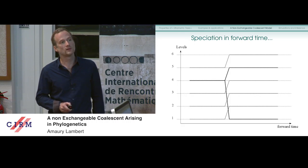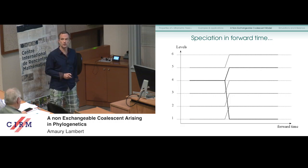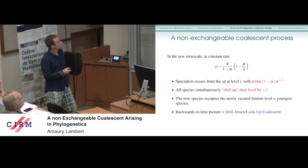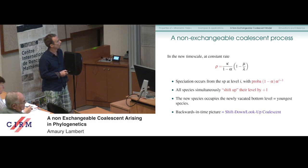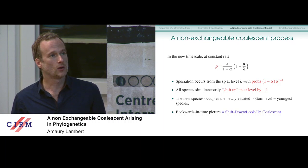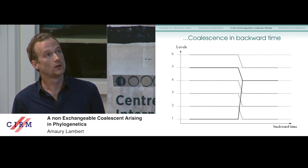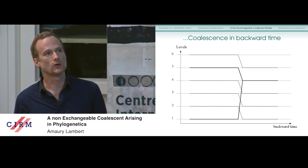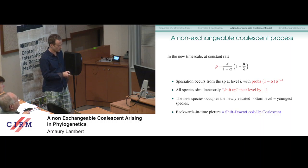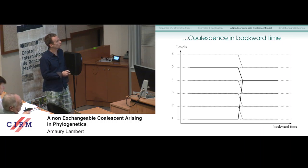At constant rate rho, speciation occurs from the species at level i with geometrically distributed probability. All species simultaneously shift their level up by plus one, and the new species occupies the newly vacated bottom level. In the backward-in-time picture, all levels shift by minus one, and the species at level one coalesces with a geometrically distributed level. We call this process the 'shift-down lookup coalescence' — the species at level one looks up to a level and coalesces there.